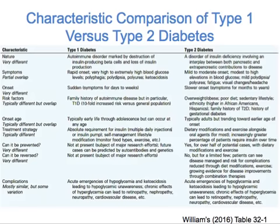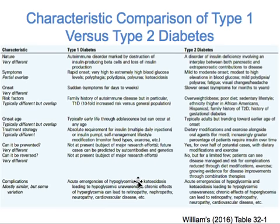A comparison table of type 1 versus type 2 diabetes shows their characteristics. Differentiating them is now more difficult because many type 2 DM patients present at a younger age, and type 1 diabetes can also occur in adults. Age is not a discrete criterion to differentiate the two — it only provides a clue.